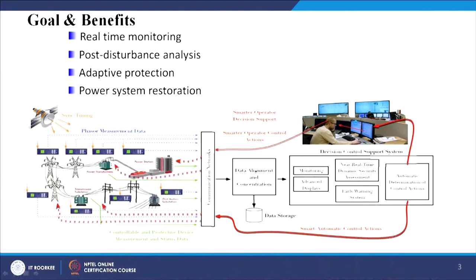The heart of WAMS technology is the Phasor Measurement Unit, which we call PMU. Nowadays we are also planning for micro PMU systems, designed for higher resolution applications like distribution networks, while the PMU targets transmission networks. The goals and benefits from WAMS include: real-time monitoring, post-disturbance analysis, adaptive protection, and power system restoration.